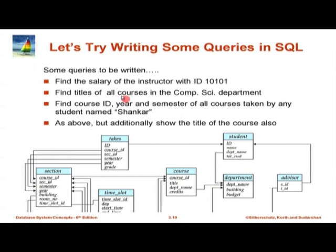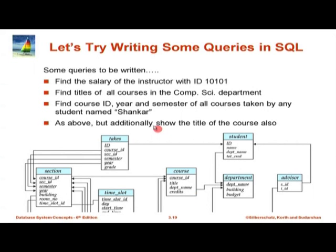For the second query — find titles of all courses in the Comp Sci department — do we need to do a join of course and department? It turns out we do not because the department_name is already present in the course table. So all the information we want is in the course table; we do not have to look at the department table. What we can do is: SELECT title FROM course WHERE department_name = 'Comp. Sci.'. That is a very simple SQL query.